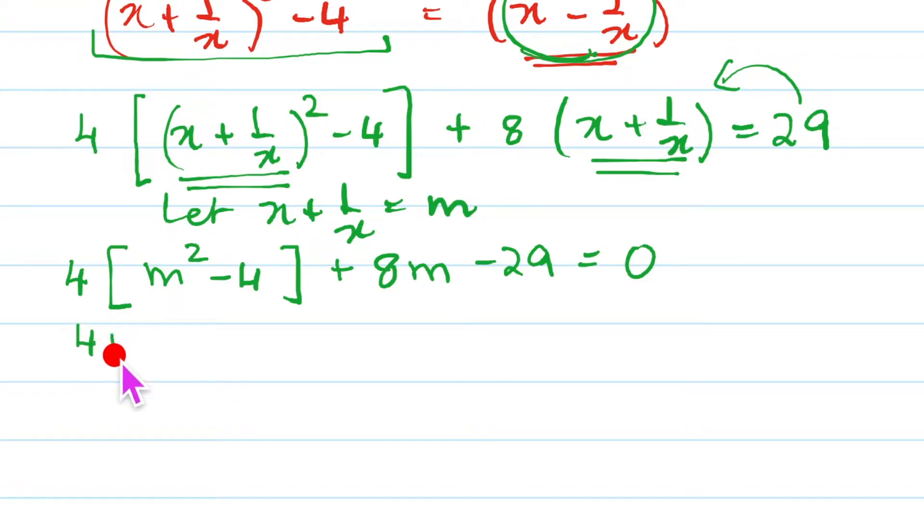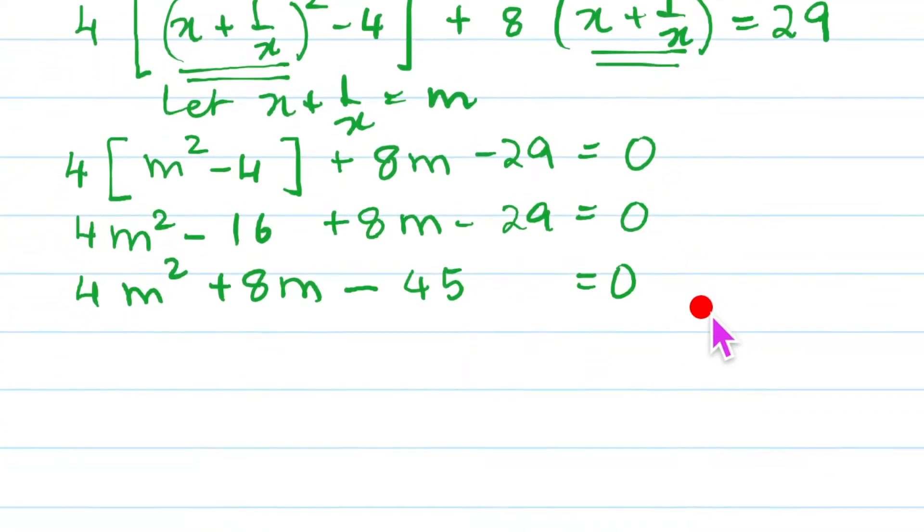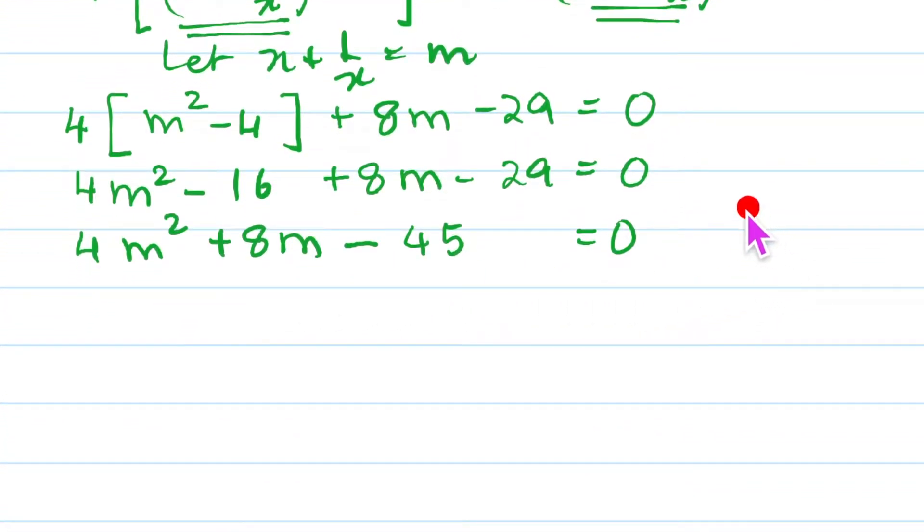Can we get a quadratic equation? Open the brackets. 4m² - 16 + 8m - 29 = 0. So that will give us 4m² + 8m minus when you add this 16 and 29 is 45. So it becomes 45 and that equal to 0. Now it looks like a proper quadratic equation.